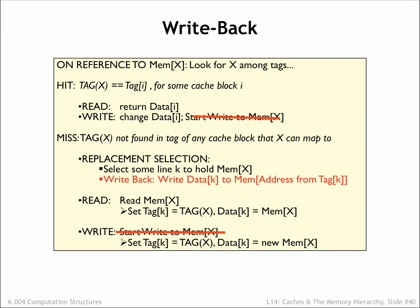Write-back is easy to implement. Returning to our original cache recipe, we simply eliminate the write to main memory when there's a write request to the cache. We just update the cache contents and leave it at that. However, replacing a cache line becomes a more complex operation, since we can't reuse the cache line without first writing its contents back to main memory in case they had been modified by an earlier write access.